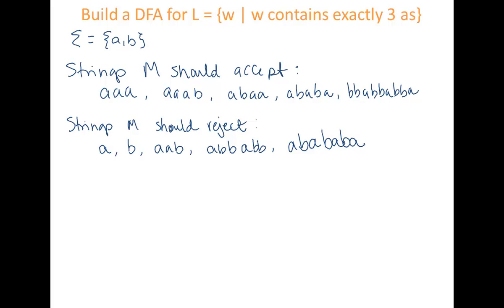As we look at these example strings, we can think about how we would know to accept and how we would know to reject. Well, we want to just keep track of how many A's we've seen so far. Since there's no restriction on B, I don't really care about seeing B's. That doesn't mean I don't need to write transitions for B — it just means what my memory needs to keep track of is how many A's I've seen.